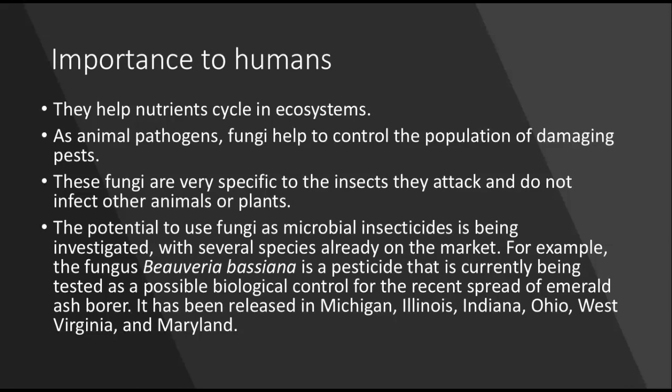The emerald ash borer decimates large adult ash trees — you can find many young trees but once they reach a certain size the borer kills them. Using a fungus that targets the emerald ash borer without affecting other organisms would be a great way to bring back the ash tree and increase tree diversity in our country. It is still an ongoing scientific experiment, but so far results are promising.